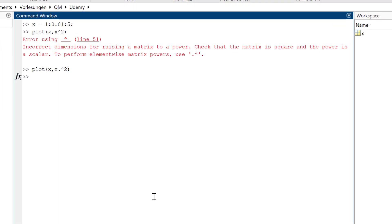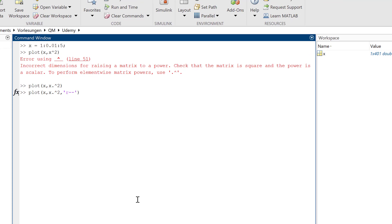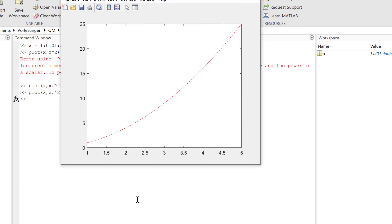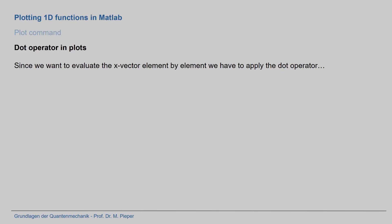You can also change the attributes in the plot command. Separated by a comma, adding 'r' gives a red curve. If I add '--', then it's a dashed red curve.